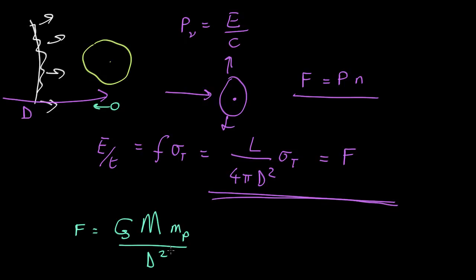So the question is, will it take off? And at take off, this force, the radiation force, must exceed the gravitational force. If this force is less than that, the gas will not move out. If this force is greater, it will. So we can set them equal to each other. And that will give us the critical value. So that is equal to L sigma t over 4 pi d squared.